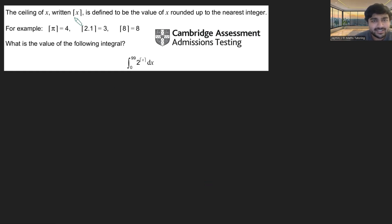The ceiling of x, written as this, is defined to be the value of x rounded up to the nearest integer. For example, the ceiling of pi is 4, because pi is 3.14. If you round it up to the nearest integer, that's 4.